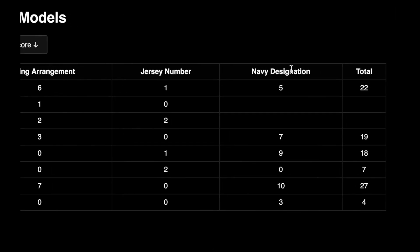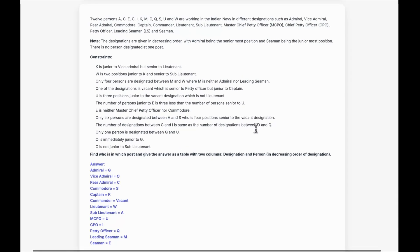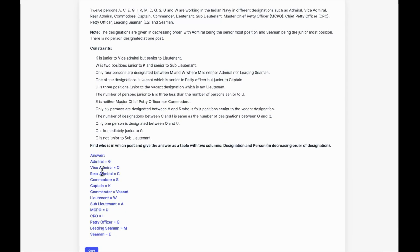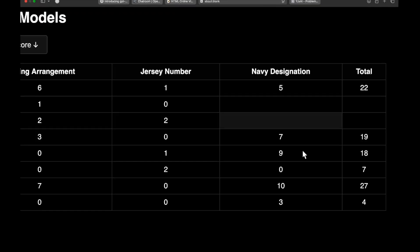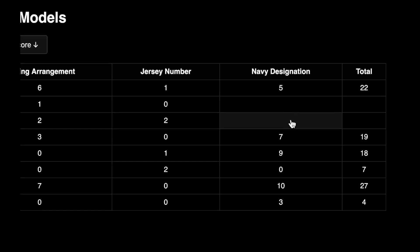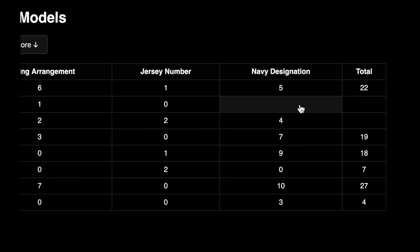The final question is the Navy designation question — again a pretty long question where you have to assign a designation to the correct person and respond with the exact answer. O4 mini high scores 4 out of 10, with the highest being Grok scoring 10 out of 10. The open source model scores just 1 out of 10.